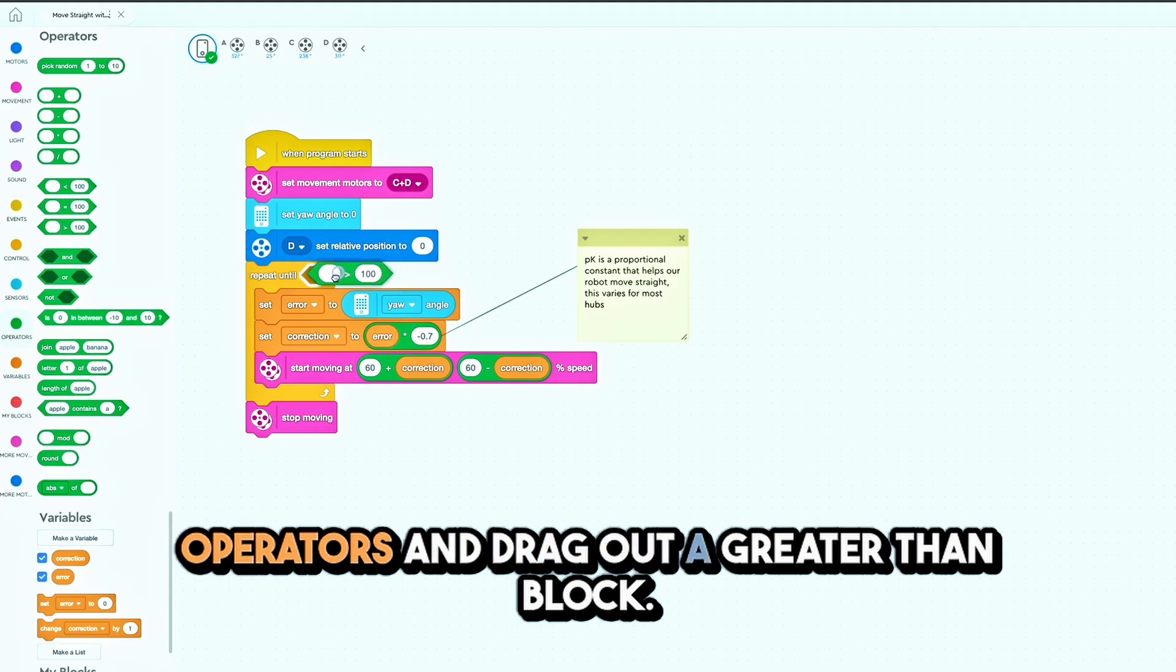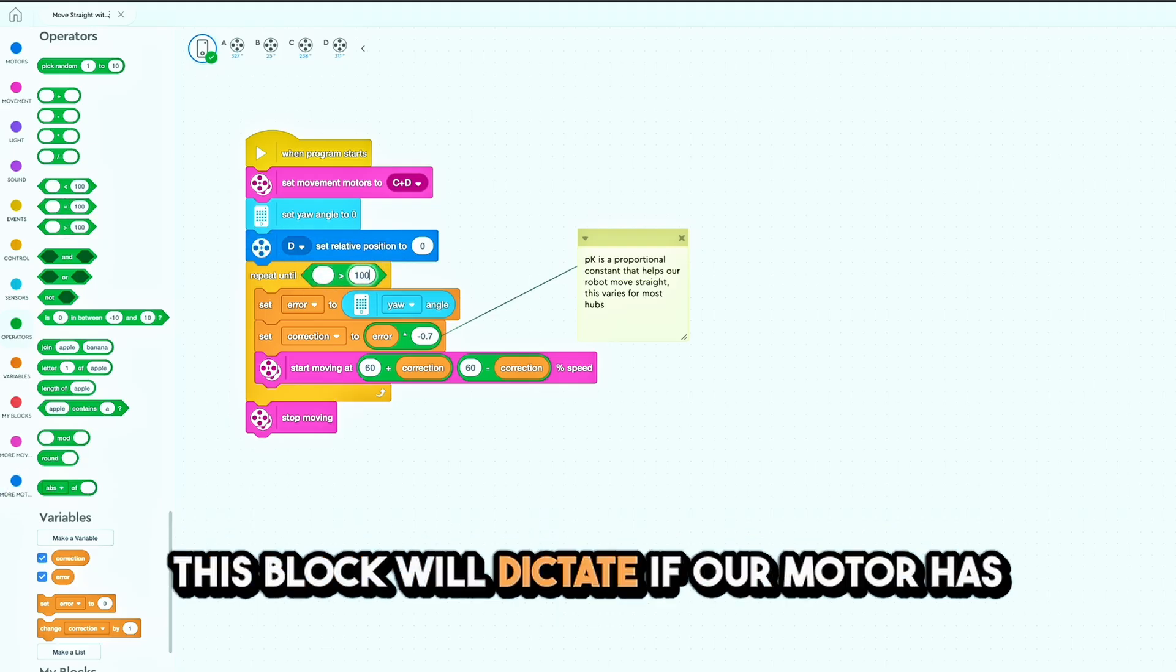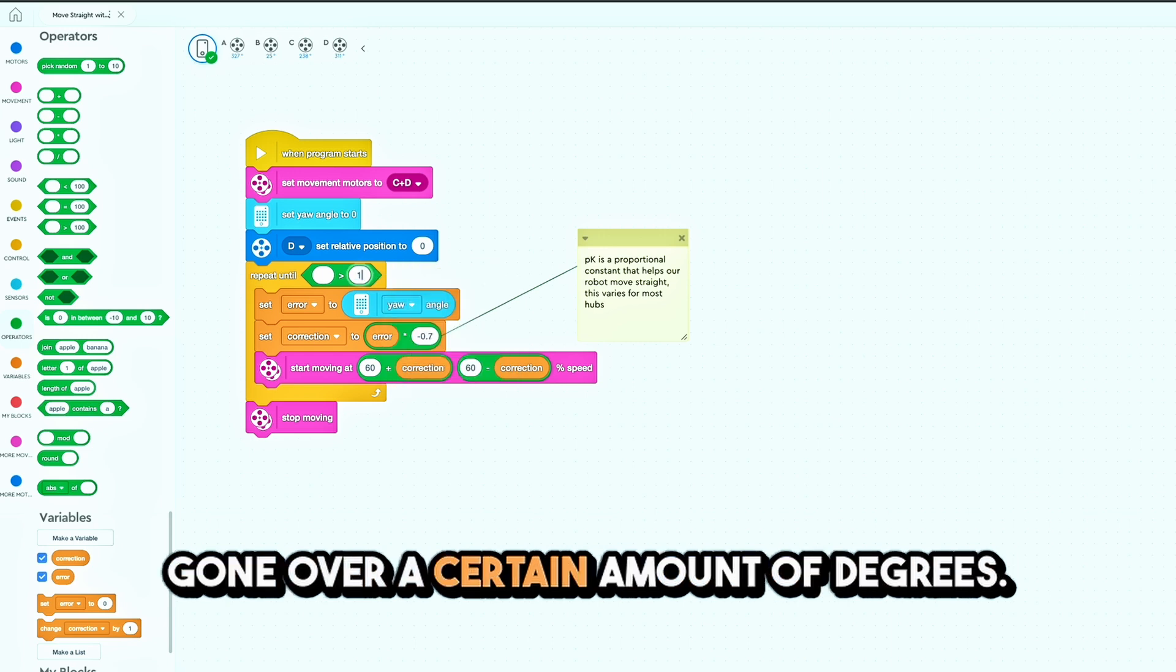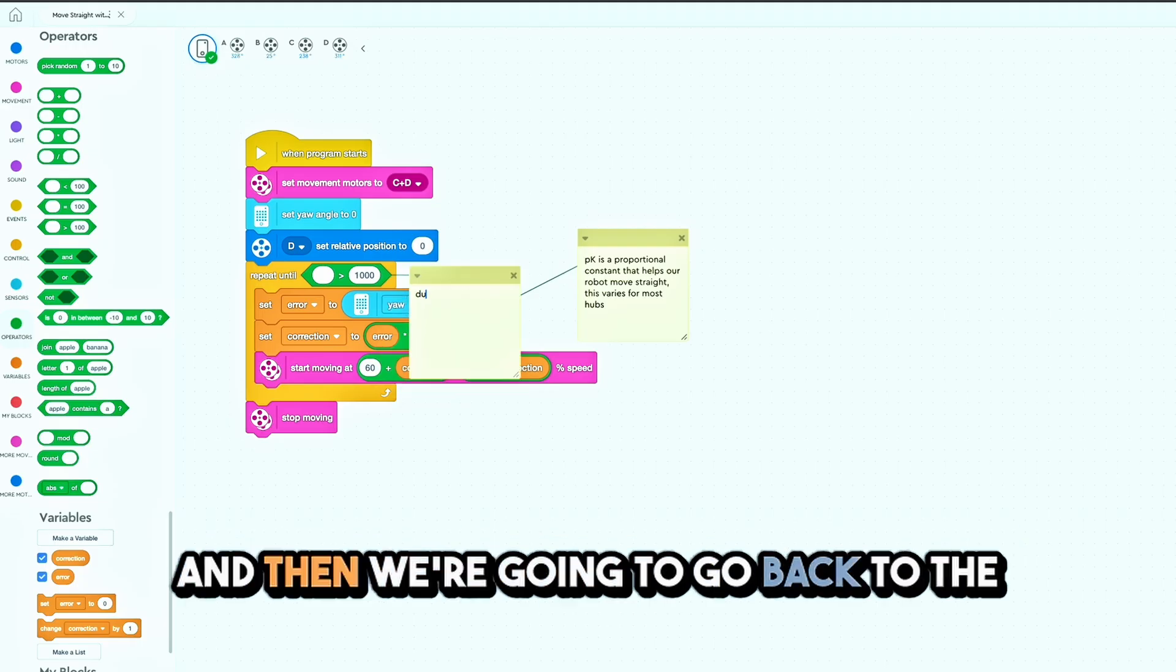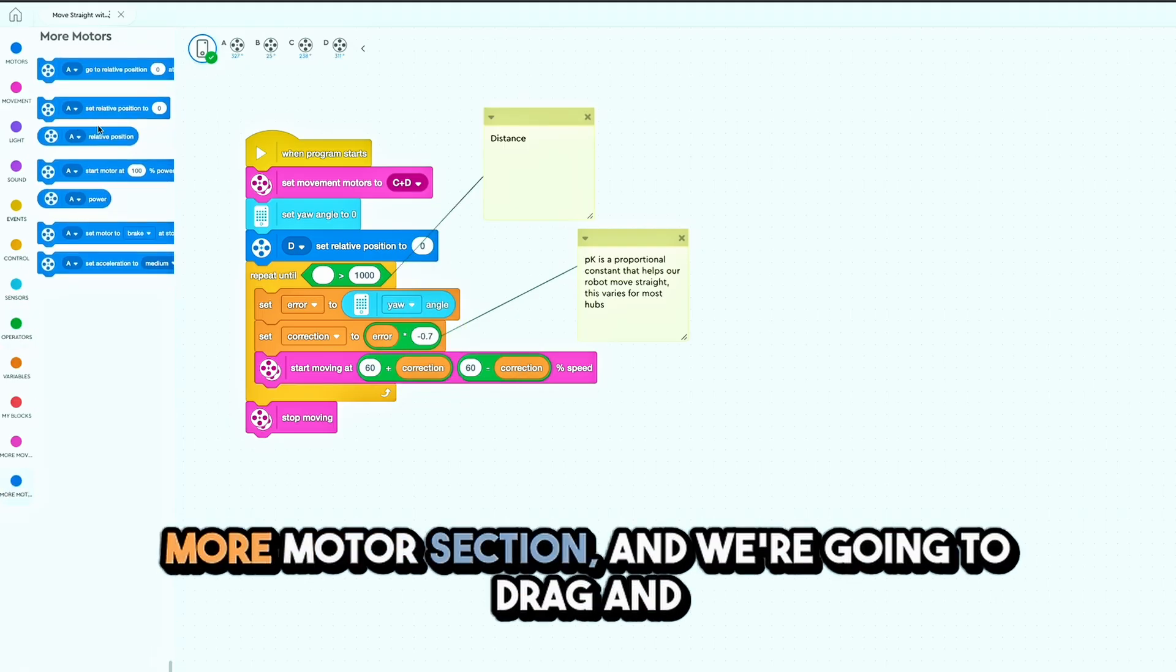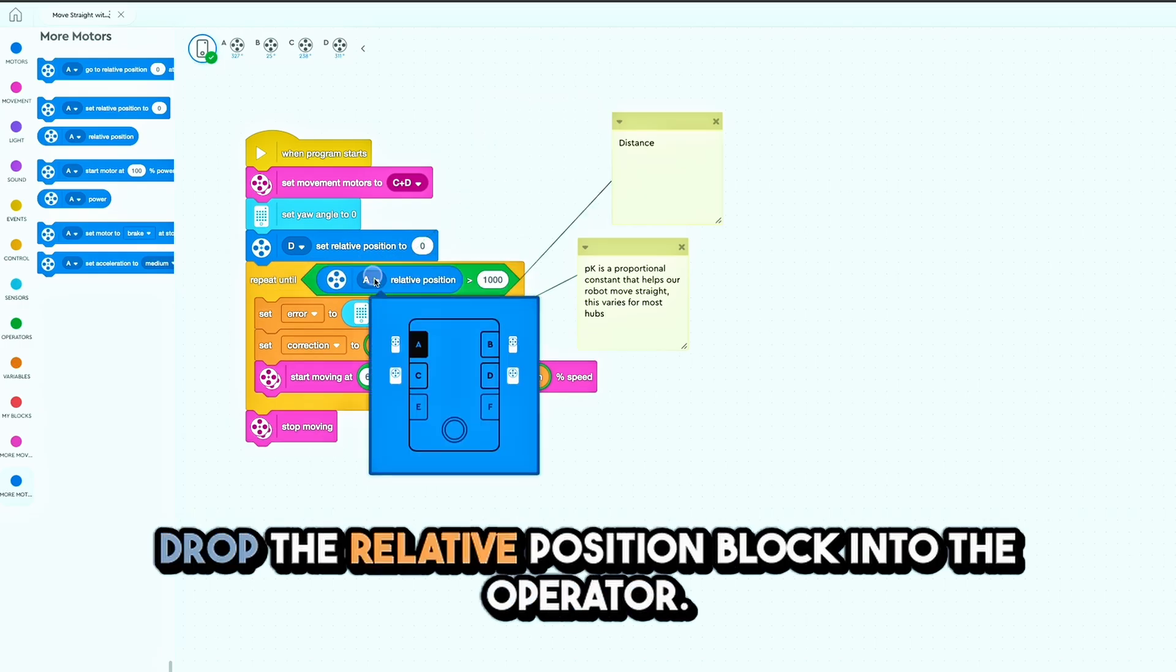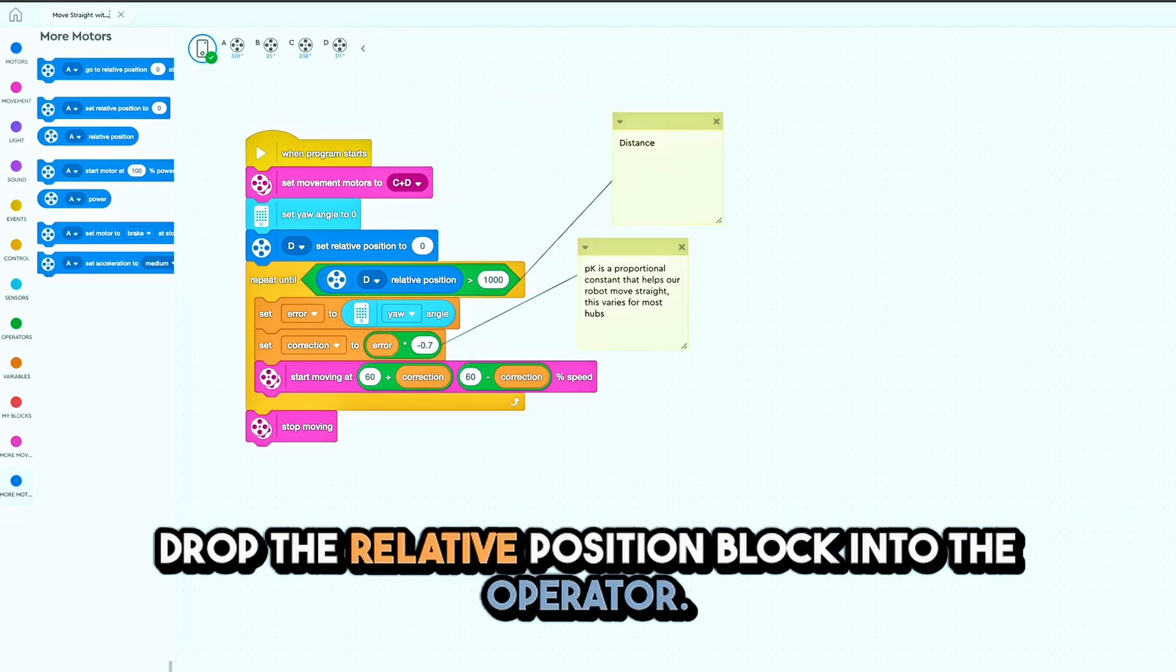We're going to change the number in it to one thousand, and then we're going to go back to the more motors section. We're going to drag and drop the relative position block into the operator.